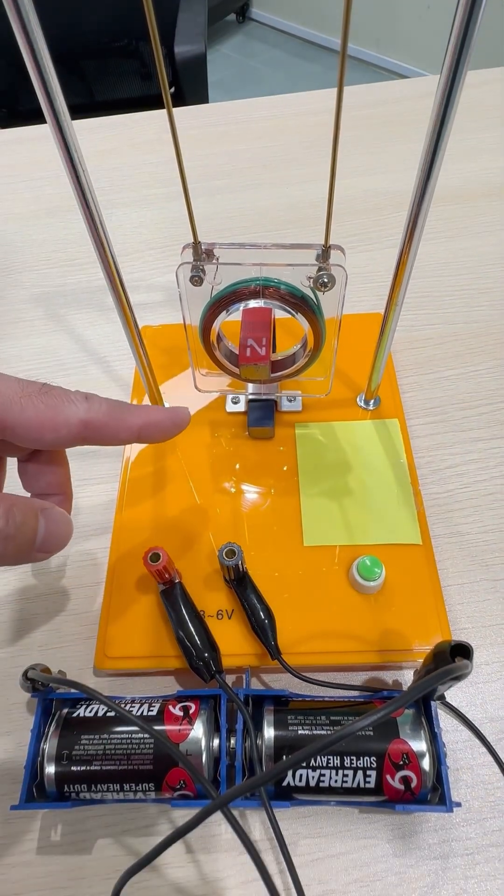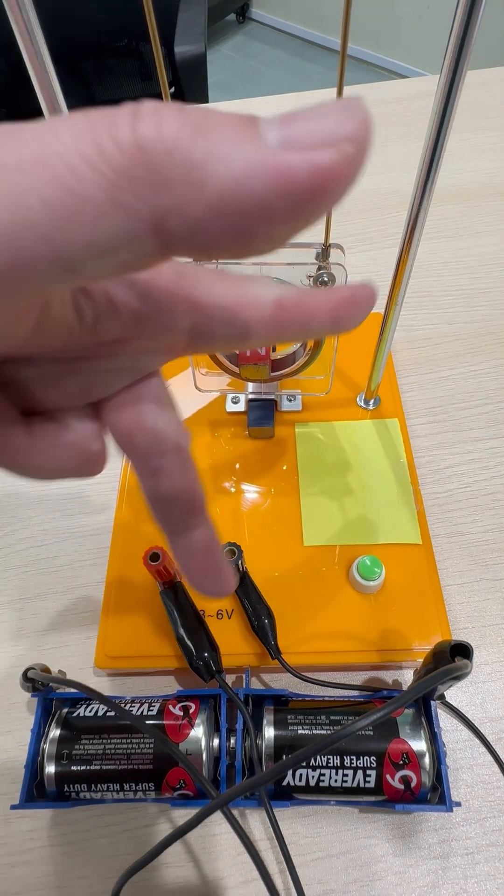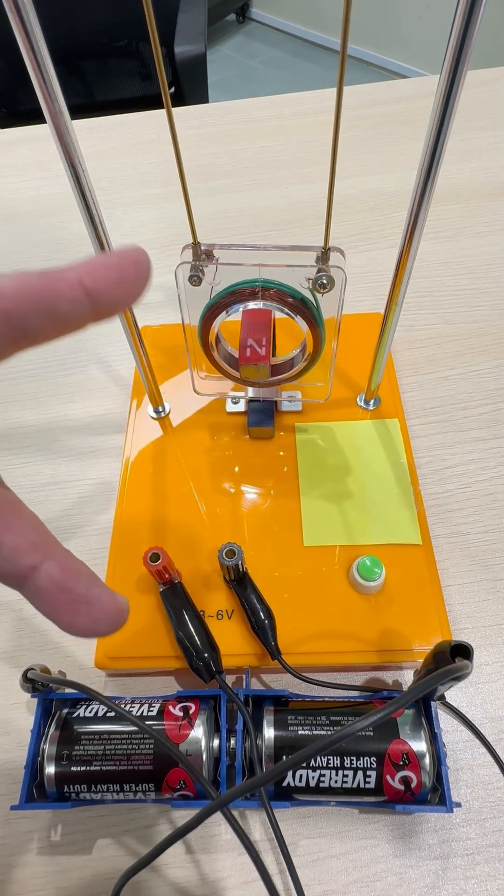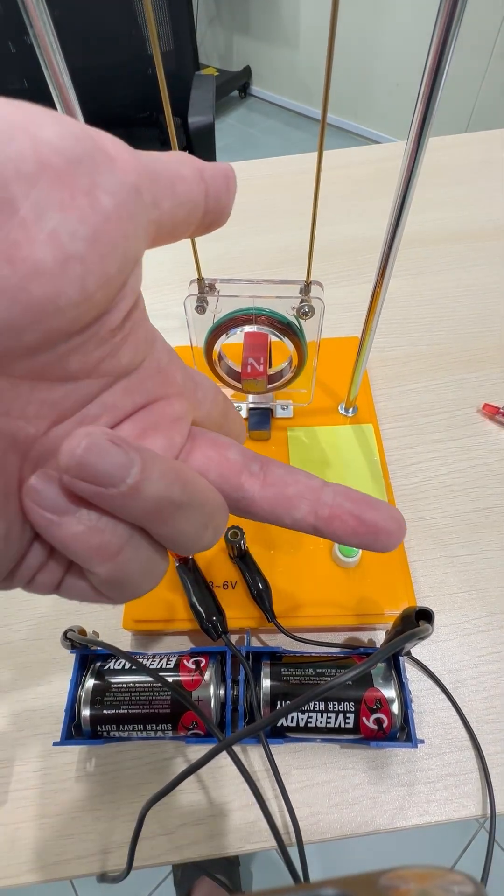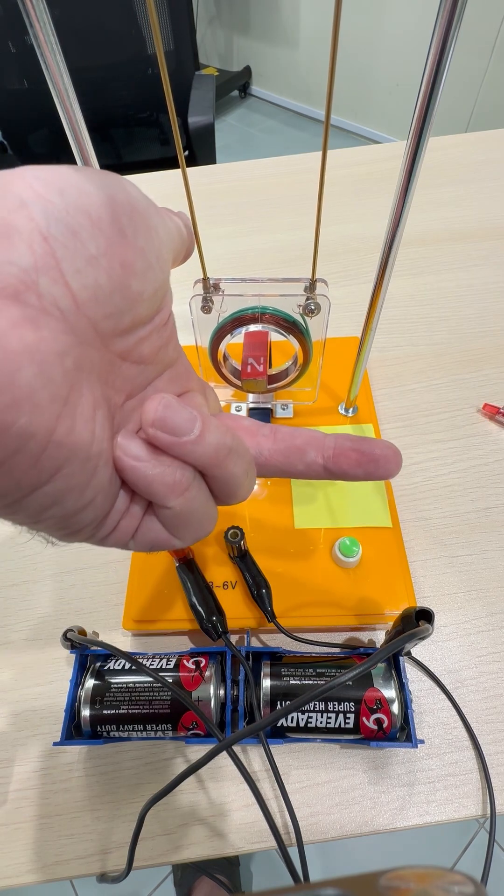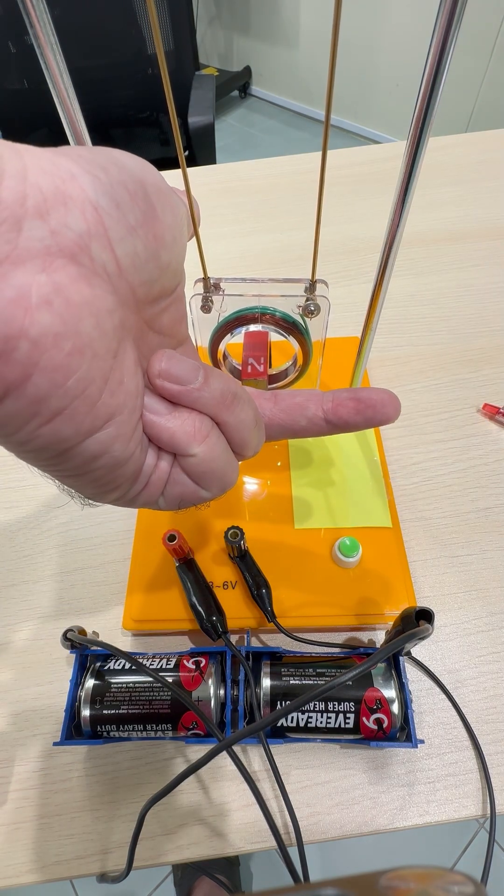If the current is now flowing to the right, our middle finger will then be pointing to the right. Our index finger, which is the magnetic field, is pointing downwards from north to south, and the current is flowing to the right, middle finger to the right.